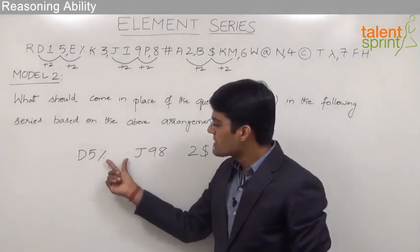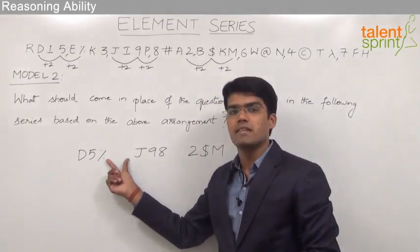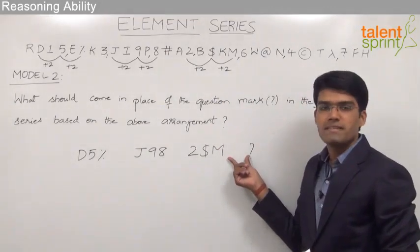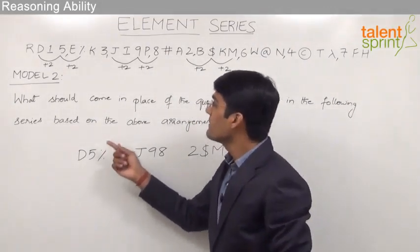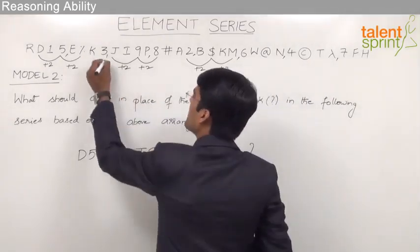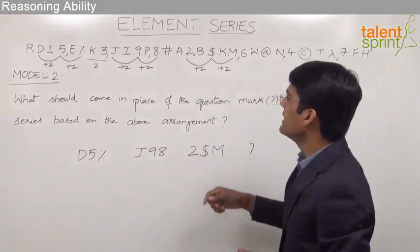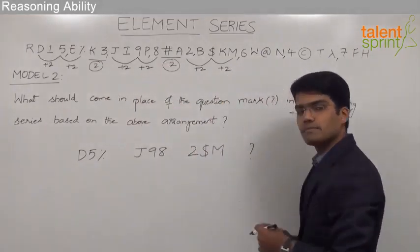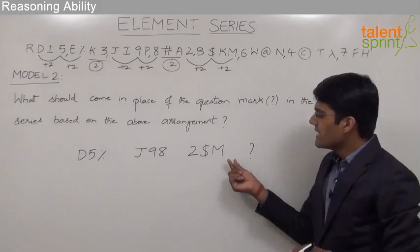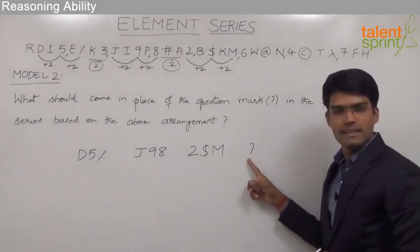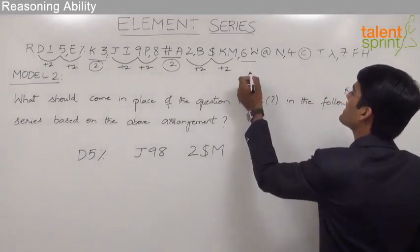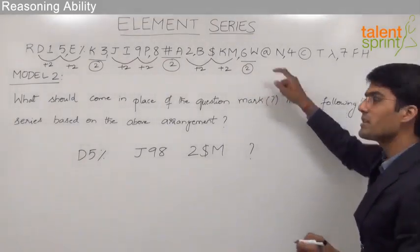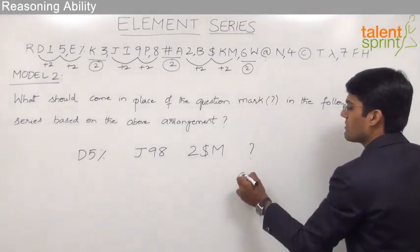We also need to observe the distance between the end of one triplet and the start of the next. The distance between % and J is two elements, and the distance between 8 and 2 is also two elements. So the distance between M and the first element of the missing triplet should also be 2. Leaving two elements after M, the first element of the missing triplet is @(at the rate).